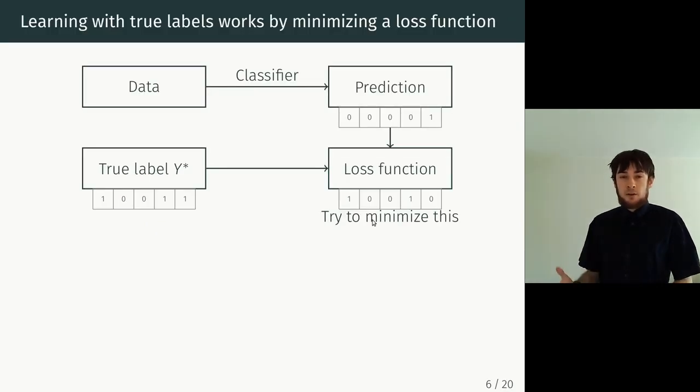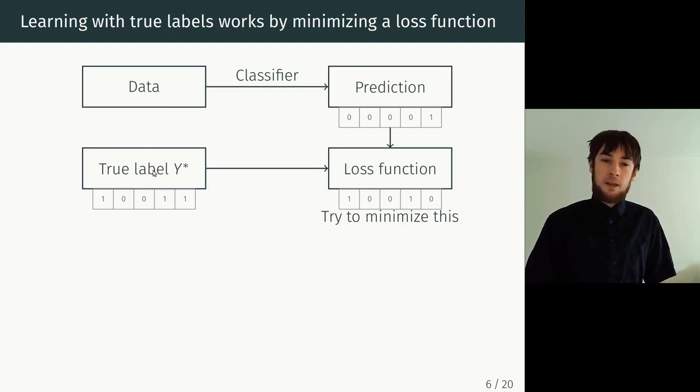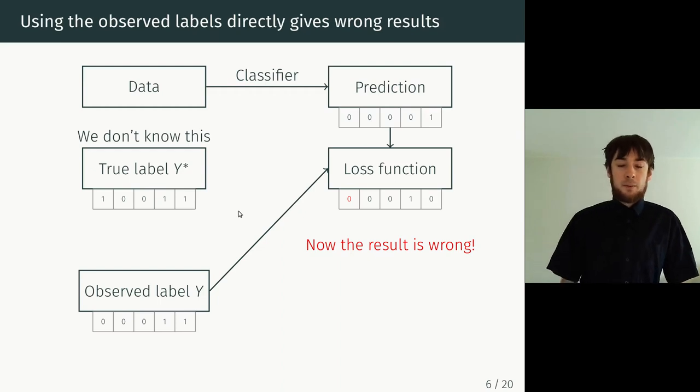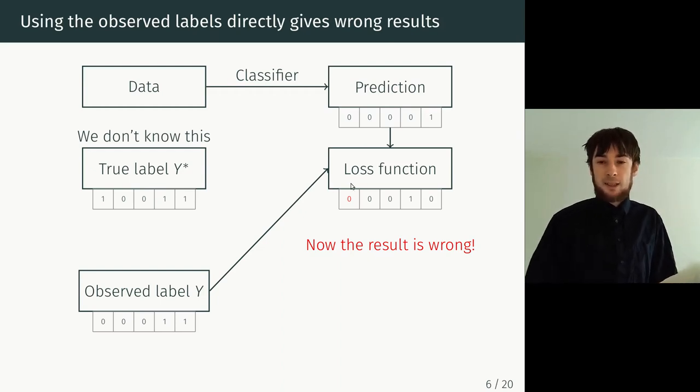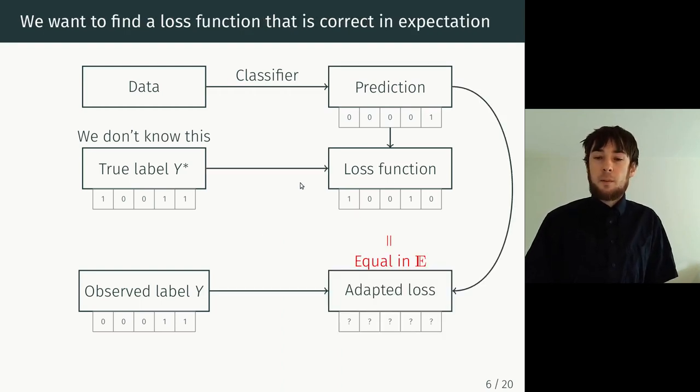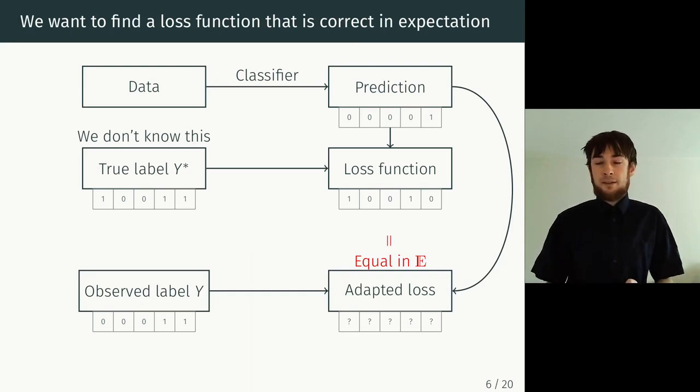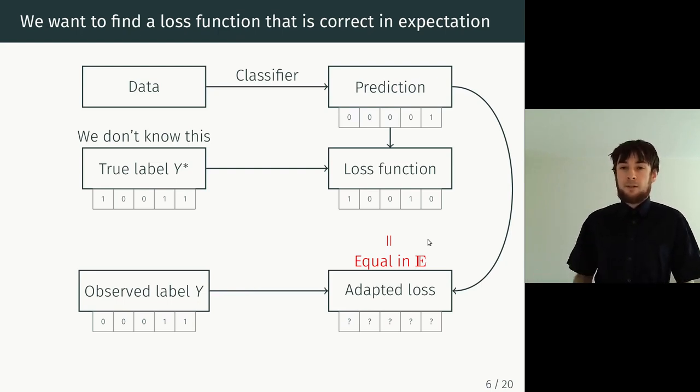If we actually had the true labels, what we would do is we would take the data, put it through a classifier to get some prediction, and compare this prediction with the true labels using a loss function, which has large values if the prediction is wrong and low values if it's correct. And then we would try to adjust the classifier in such a way that the loss function is minimized, for example, using gradient descent. Unfortunately, we don't have the true labels. So what we can do is put in the observed labels in the loss function, but this gives us wrong results. So that's not what we want to do. Instead, we want to figure out whether we can construct an adapted loss function so that if we put in the observed labels, the result is still correct. We can't have it be correct for every instance because the observed labels are stochastic. But what we can do is that if we repeat the observation process multiple times, on average, we get the correct result. Or in other words, that the adapted loss is an unbiased estimate of the true loss function.